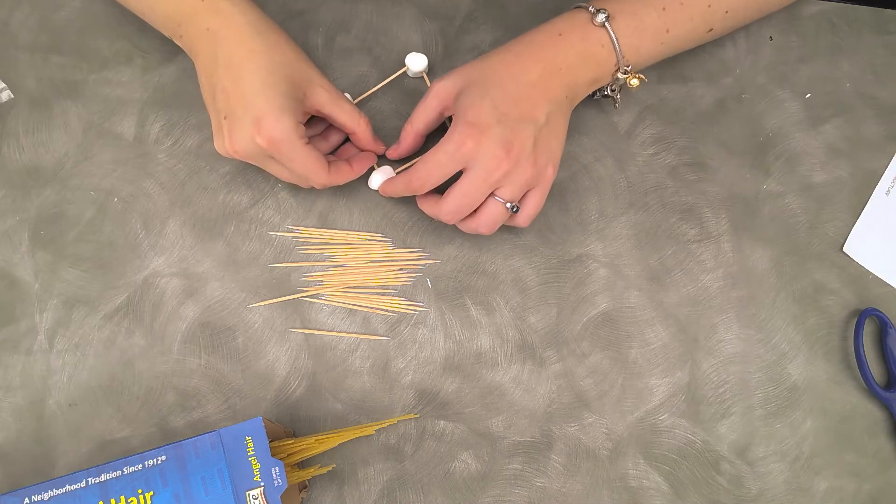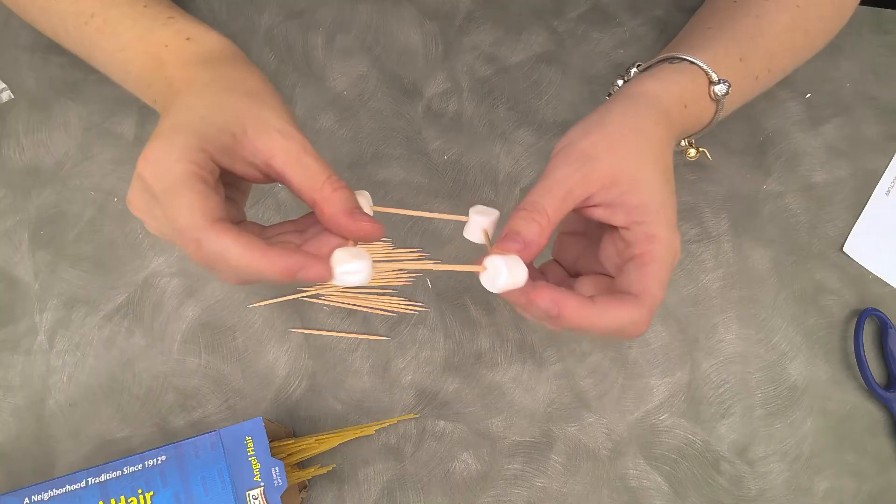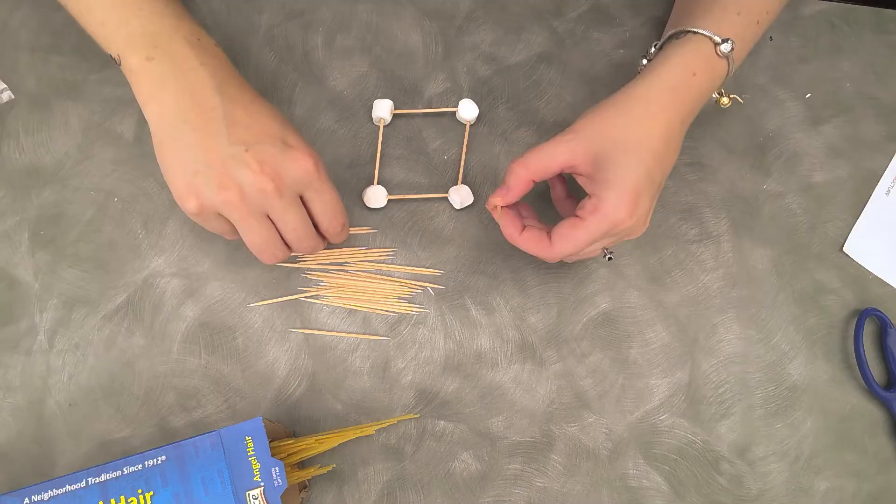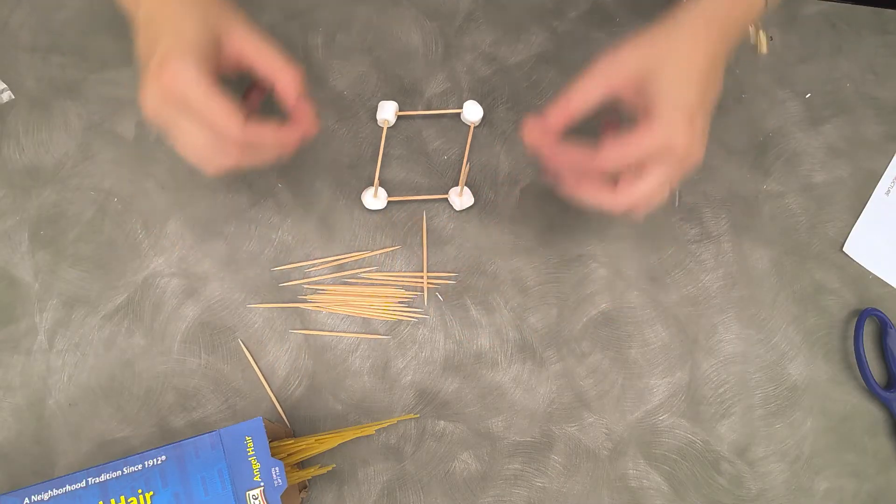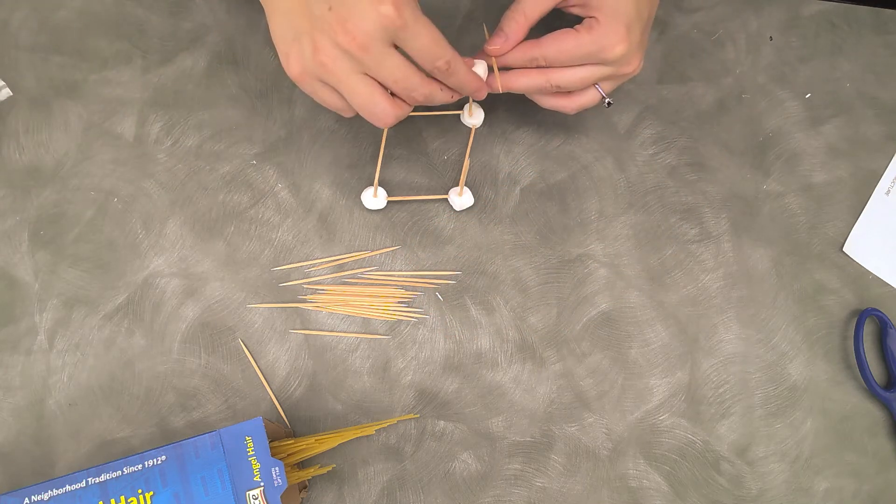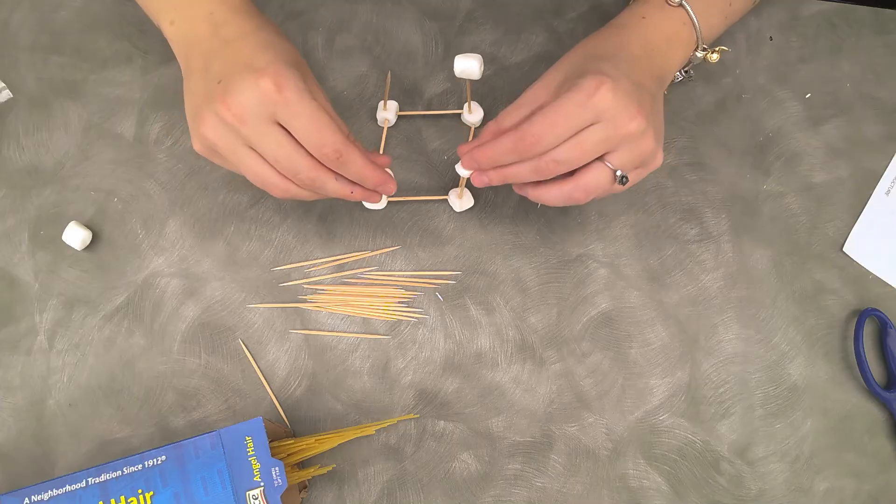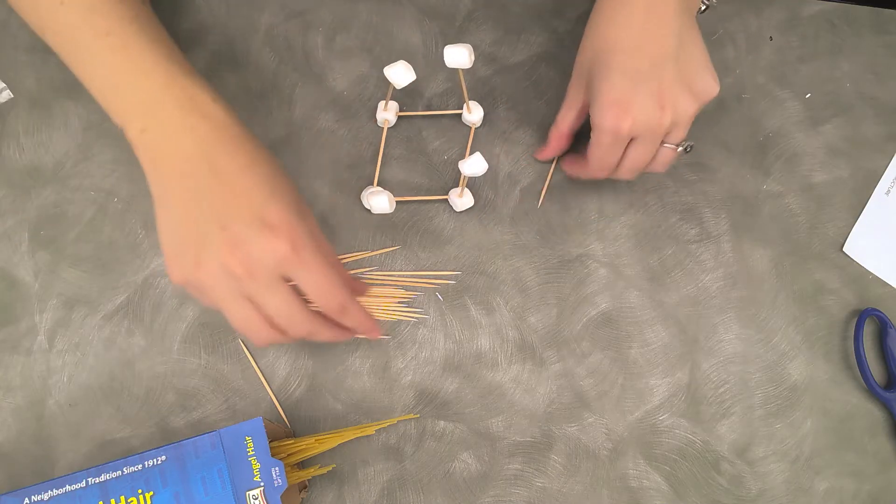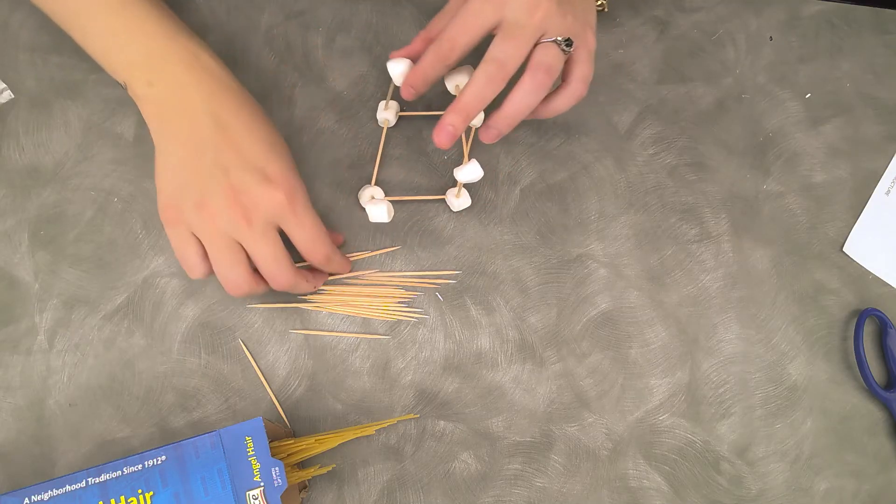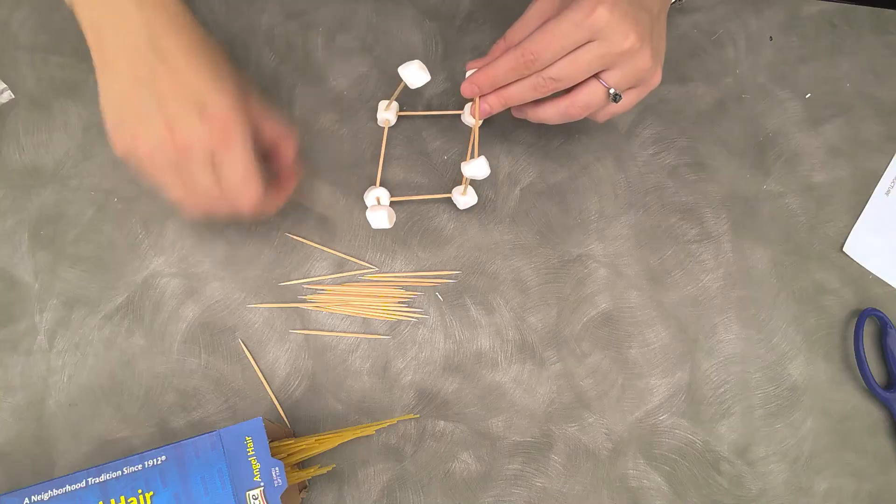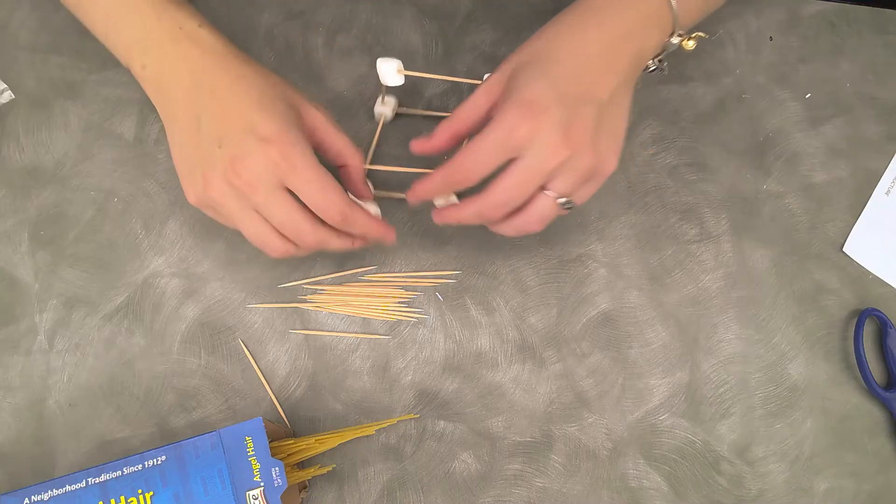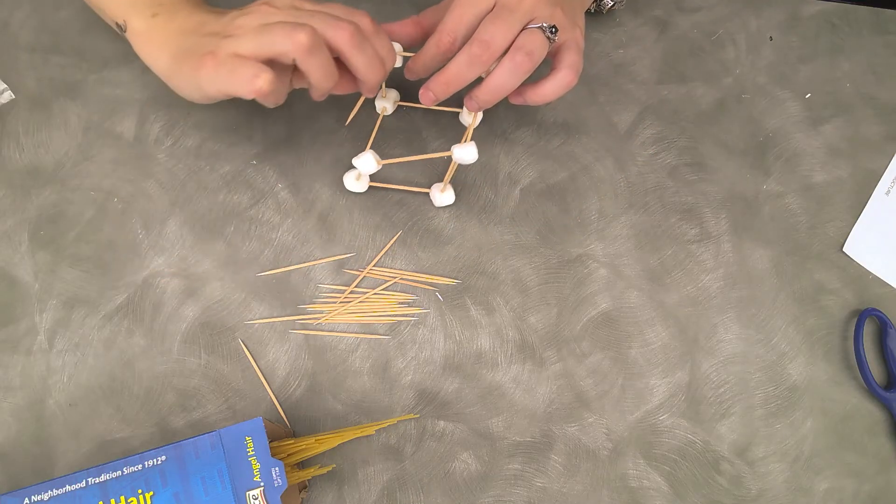So all I'm doing is poking the toothpicks into the marshmallows just like that. So I'm going to make a very small one and then we're going to test it. It's pretty simple. You're just going to stick the toothpicks into the marshmallows. And it's already kind of falling.